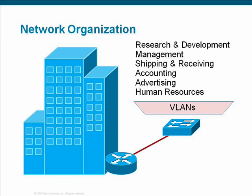Another example of a VLAN implementation might be an Enterprise Headquarters building. In such a building, there may be many departments, such as Research and Development, Management, Shipping and Receiving, Accounting, Advertising, and Human Resources. Assigning each department to its own VLAN leads not only to broadcast containment, but also better network organization.